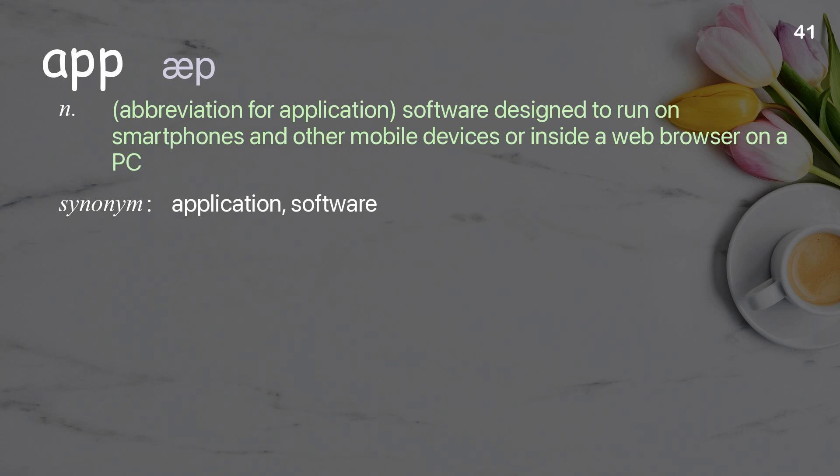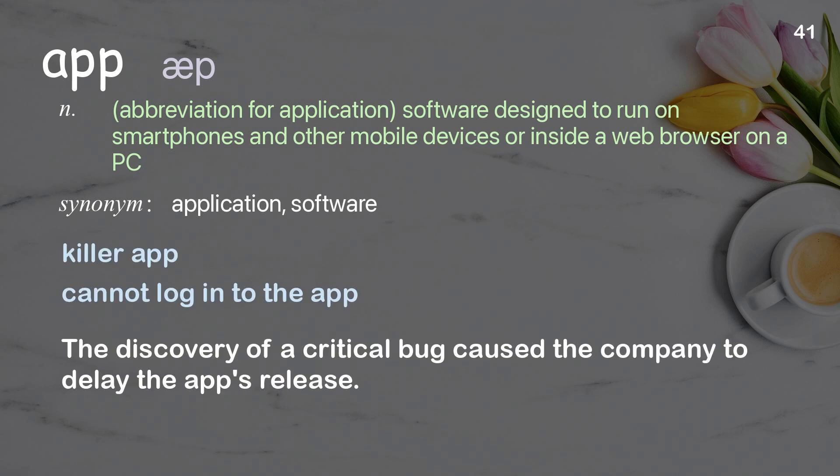App: abbreviation for application; software designed to run on smartphones and other mobile devices or inside a web browser on a PC. Examples: killer app, cannot log in to the app. The discovery of a critical bug caused the company to delay the app's release.